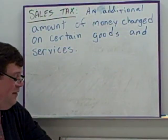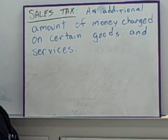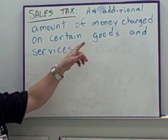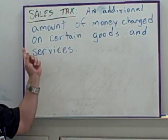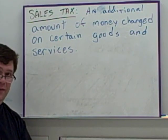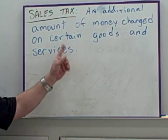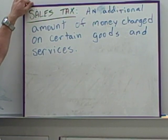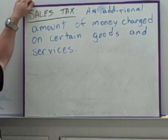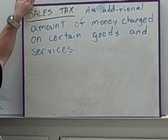Then there is sales tax. This is how the man makes his money. The tax man gets an additional amount of money charged on certain goods and services. Sales tax is also going to be added to the price. Markup is added, sales tax is added, discount is subtracted.